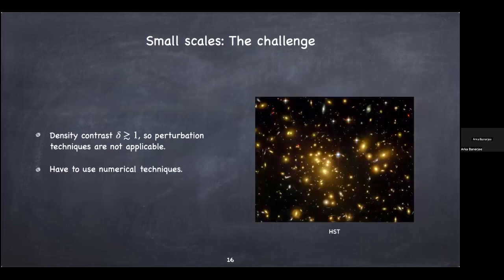So this is why we want to go down to smaller scales. The challenge is that the density contrast is now much greater than 1, so perturbation techniques will not work. We need something new — numerical techniques such as N-body simulations. These are typically much more expensive than perturbation theory calculations. The challenge is: how do we cast the problem of structure formation into something the computer can solve in manageable time?